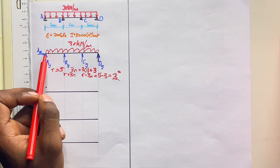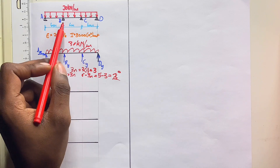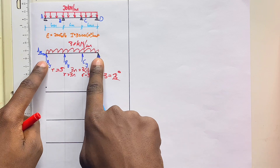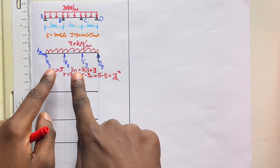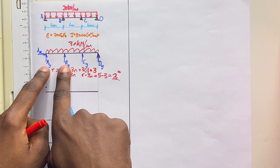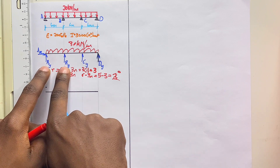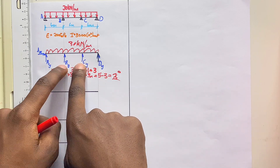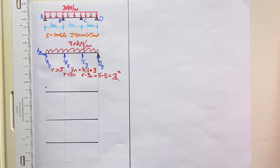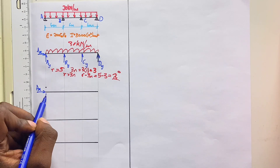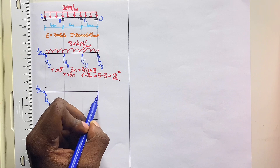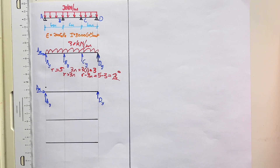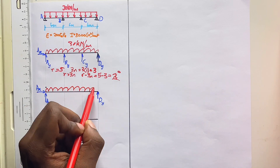Remember that when you choose redundants, your structure must still become determinate but remain stable. If I take off B and C, I still have A and D to hold it in place. My choice is arbitrary — as long as the remaining supports are enough to prevent rotation or movement, you can choose any two. I'm going to choose the ones in the middle because I feel they are the safest. So if I remove the redundants, I will have A_x, A_y, and D_y remaining.